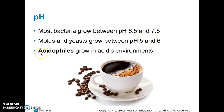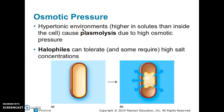Molds and yeasts — the fungi — can grow at a slightly more acidic pH. There are even species of bacteria and archaea called acidophiles, whose enzymes are adapted to work at very low pH and actually require an acidic environment to grow. Coffee, for example, is slightly acidic, so there's not much microbial growth in a coffee cup.